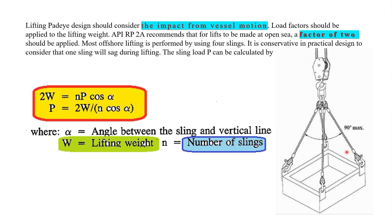Here you can see the lifted object with the force slings and the hook — this is 90 degrees maximum. Lifting padai design should consider the impact from vessel motion; it's also a lift at sea, so we need to consider the impact from vessel motion. Load factors should be applied to the lifting weight — it's not simply the dead weight of the structure. EPRP2A recommends that for lifts made at open sea, a factor of two should be applied. Lifting is performed using four slings most of the time, sometimes three slings.